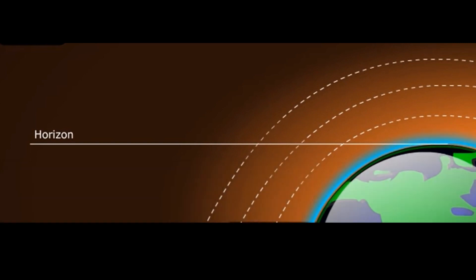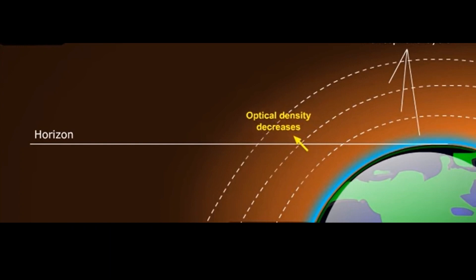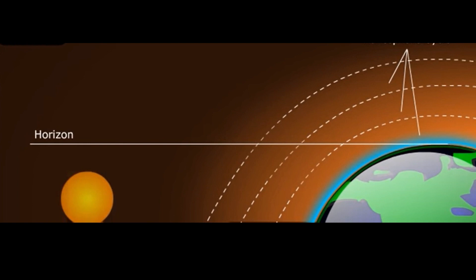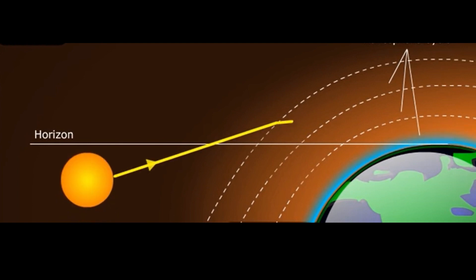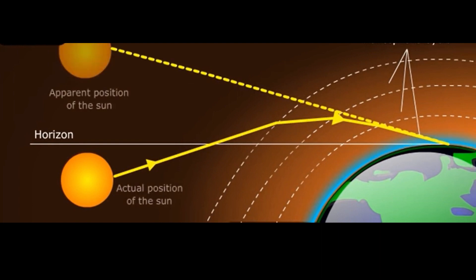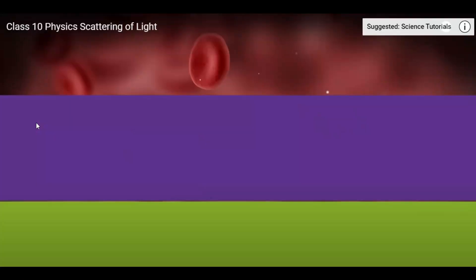We can get to see the sunrise even before the sun actually rises — this is called advanced sunrise, and there is also a delayed sunset. The optical density of the atmosphere decreases with increasing height. Just before actual sunrise, the sunlight enters obliquely into the atmosphere and gets refracted through different layers, bending so that sunlight reaches Earth's surface in a curved path. From the observer's point of view, the sun appears to be slightly above its actual position. Because of this, we see the sun about two minutes before actual sunrise and two minutes after actual sunset.